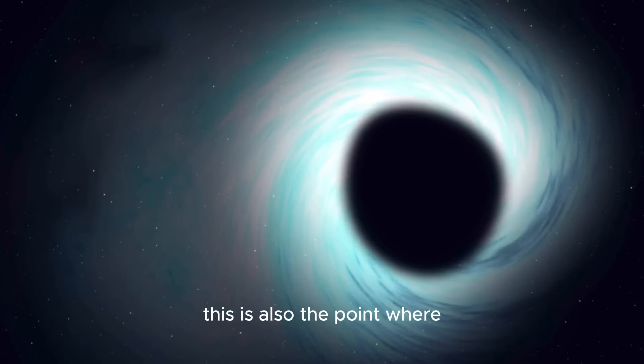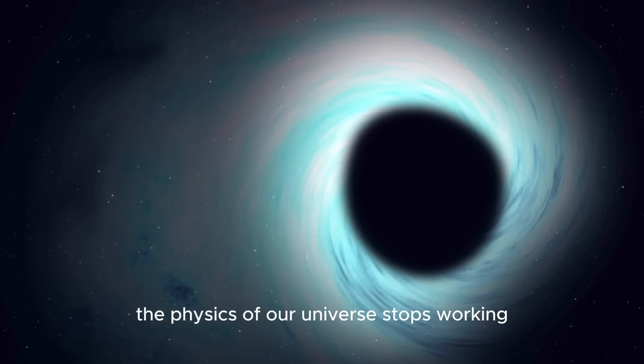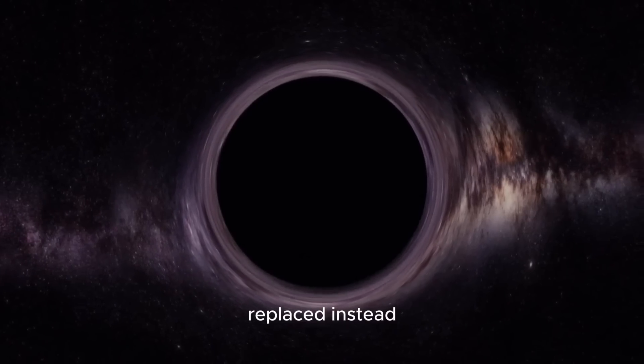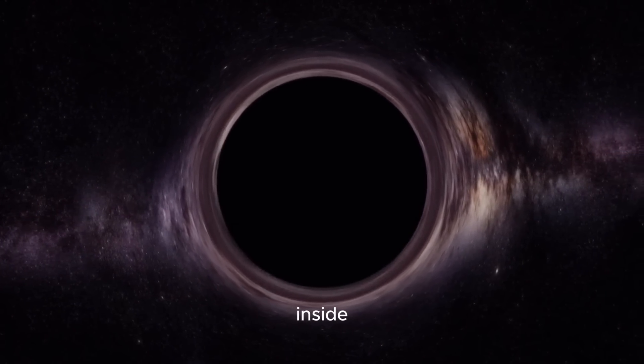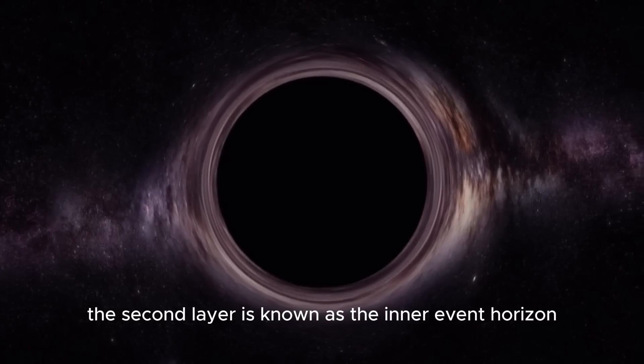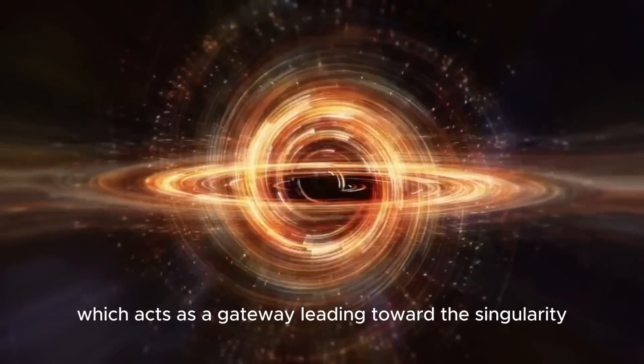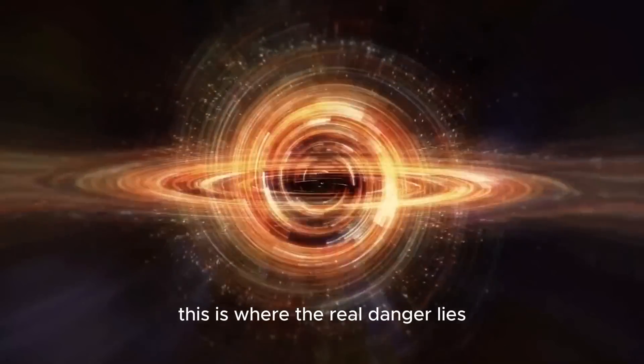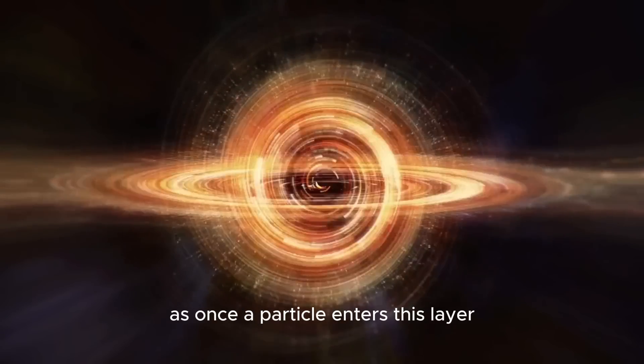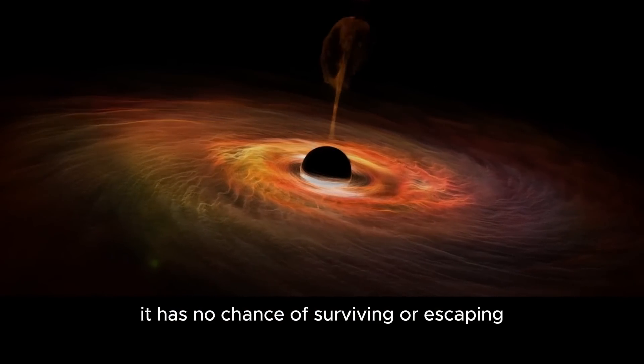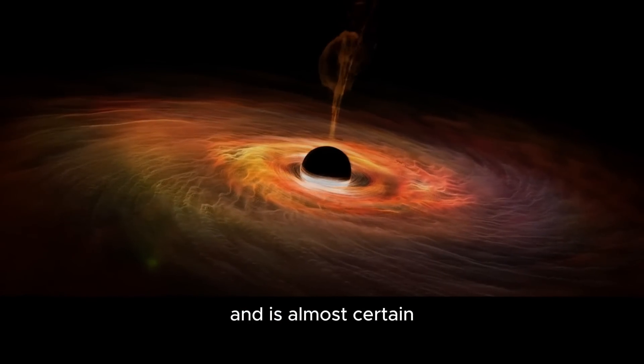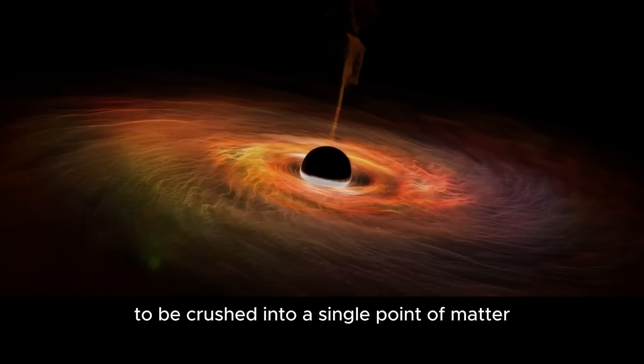This is also the point where the physics of our universe stops working, replaced instead by a new set of chaotic laws that govern what goes on inside. The second layer is known as the inner event horizon, which acts as a gateway leading toward the singularity. This is where the real danger lies, as once a particle enters this layer, it has no chance of surviving or escaping and is almost certain to be crushed into a single point of matter.